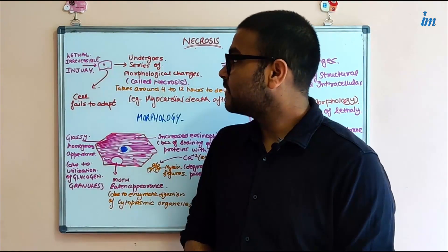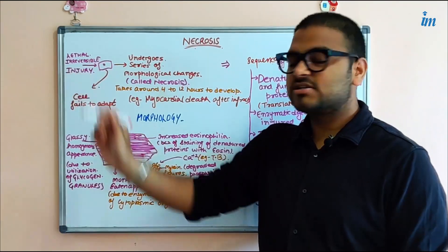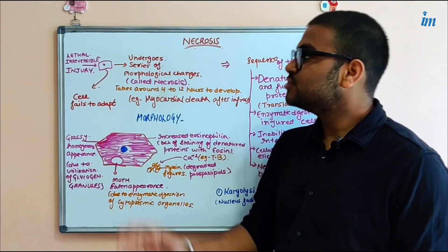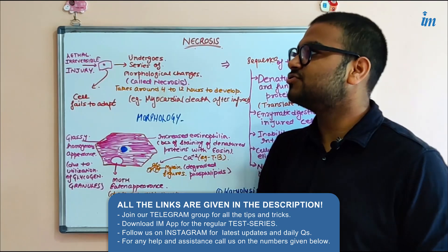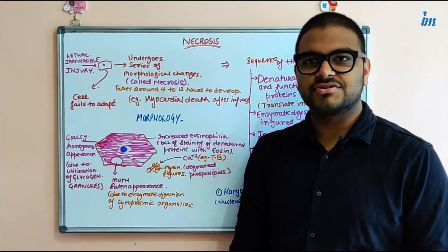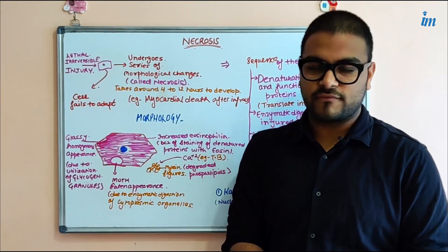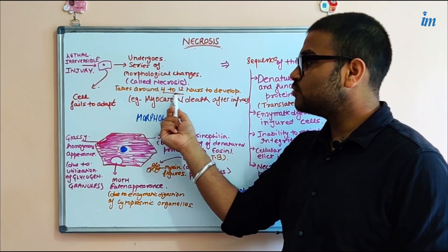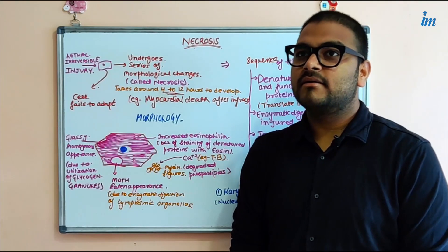So let us study when necrosis occurs and what it basically is. A cell is exposed to a lethal, irreversible injury — as I explained in my previous videos. The cell fails to adapt because the injury was so intense that the cell didn't get any chance to adapt. This lethal injury is followed by a series of morphological changes that occur step by step, not all at once. Because they occur step by step, these changes usually take 4 to 12 hours to develop after the injury has happened.